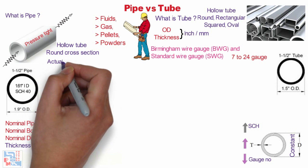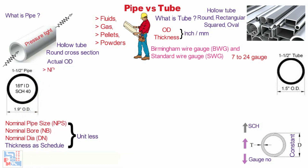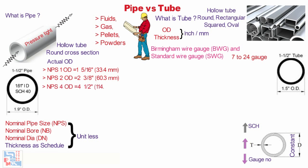Let's see the actual outside diameters of pipe. NPS 1 inch has an actual OD of 1 and 5/16 inches, that is 33.4 mm. NPS 2 has an actual OD of 2 and 3/8 inches, that is 60.3 mm. NPS 4 has an actual OD of 4.5 inches, that is 114.3 mm. NPS 14 has an actual OD of 14 inches, that is 355.6 mm. From NPS 14 onwards, OD matches with the NPS size.